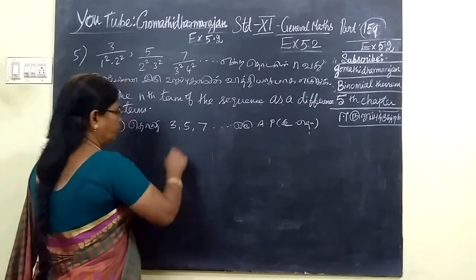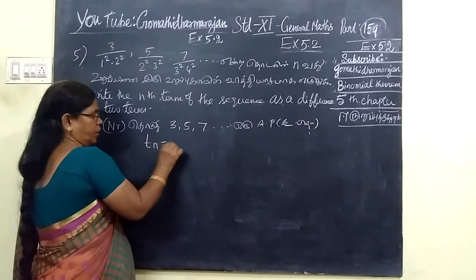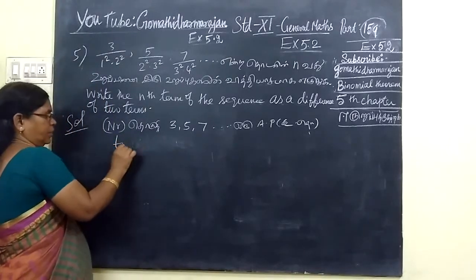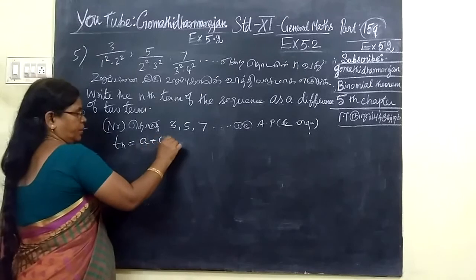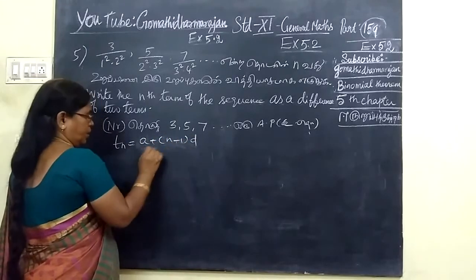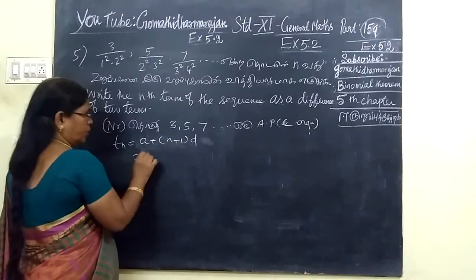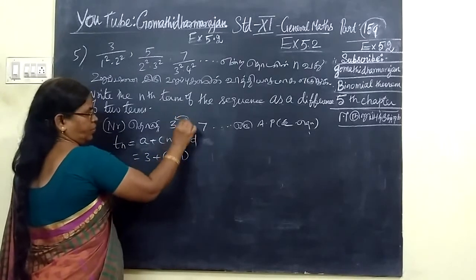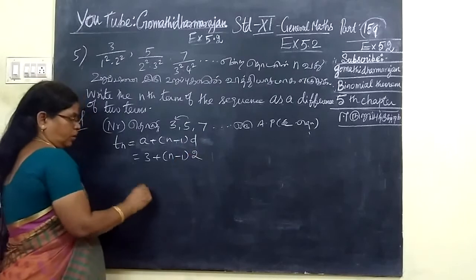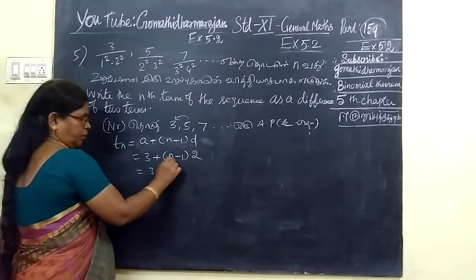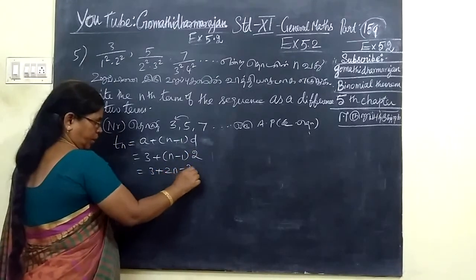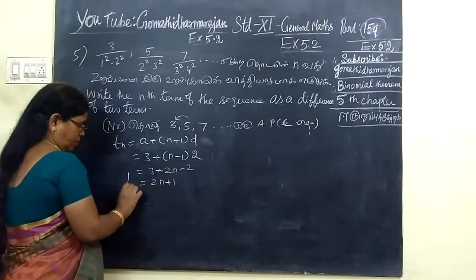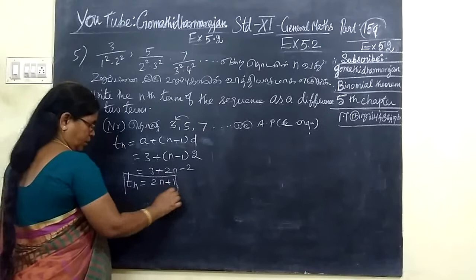This is n minus 1. tn found by n: tn equals a plus n minus 1 into d. What is a? d equals 3. d is the common difference; the common difference is 2. So 3 plus 2n minus 2: 3 minus 2 is 1, so 2n plus 1.